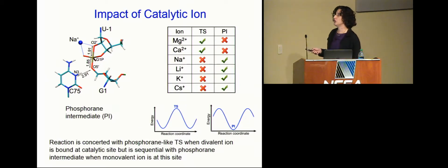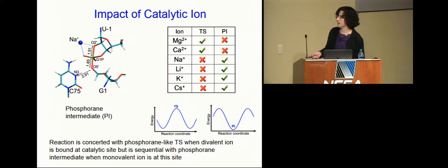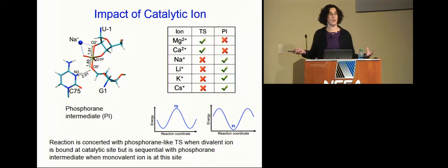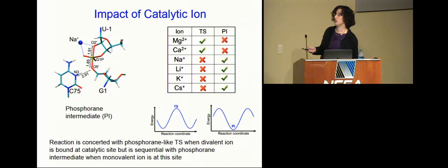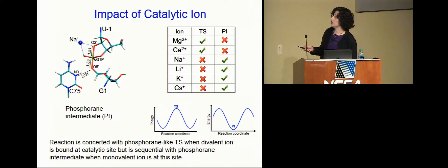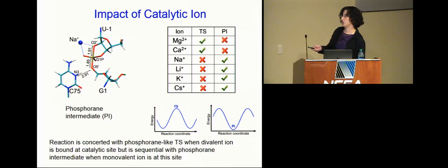We also tried putting sodium instead of magnesium. Magnesium is what's naturally there in biological systems, but with sodium we get a different picture: instead of a concerted mechanism over a single barrier, you get an intermediate — a phosphorane intermediate — making it a sequential reaction. It goes over one barrier to an intermediate, then a second barrier to product. The only thing we changed was sodium instead of magnesium. We then tried other divalent and monovalent ions: divalent ions like magnesium and calcium give a concerted mechanism, while monovalent ions like sodium, lithium, potassium, and cesium give a sequential mechanism with a phosphorane intermediate.